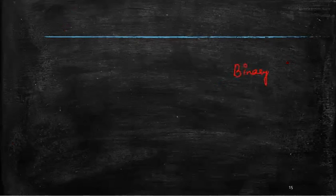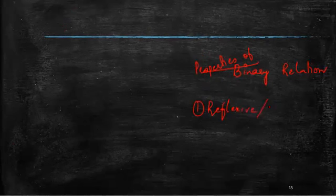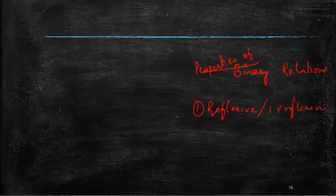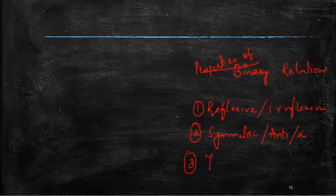In the previous lecture we have already seen the types of binary relation. We have seen what it means by a relation and also the properties of binary relation. We have studied reflexive and irreflexive, then symmetric, antisymmetric and asymmetric. Now in this lecture we will study about the third property which is transitive relation.